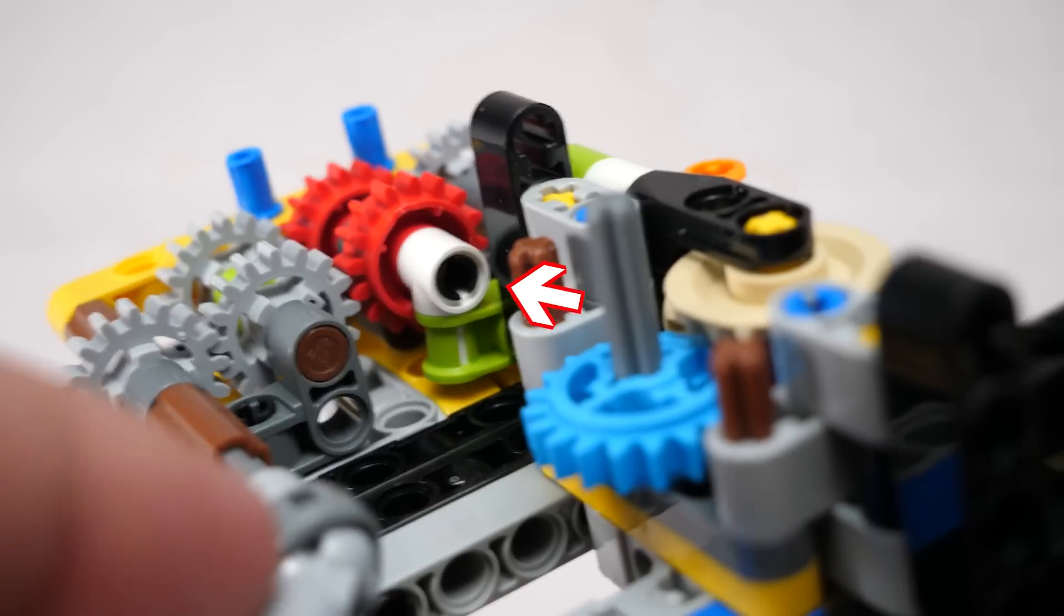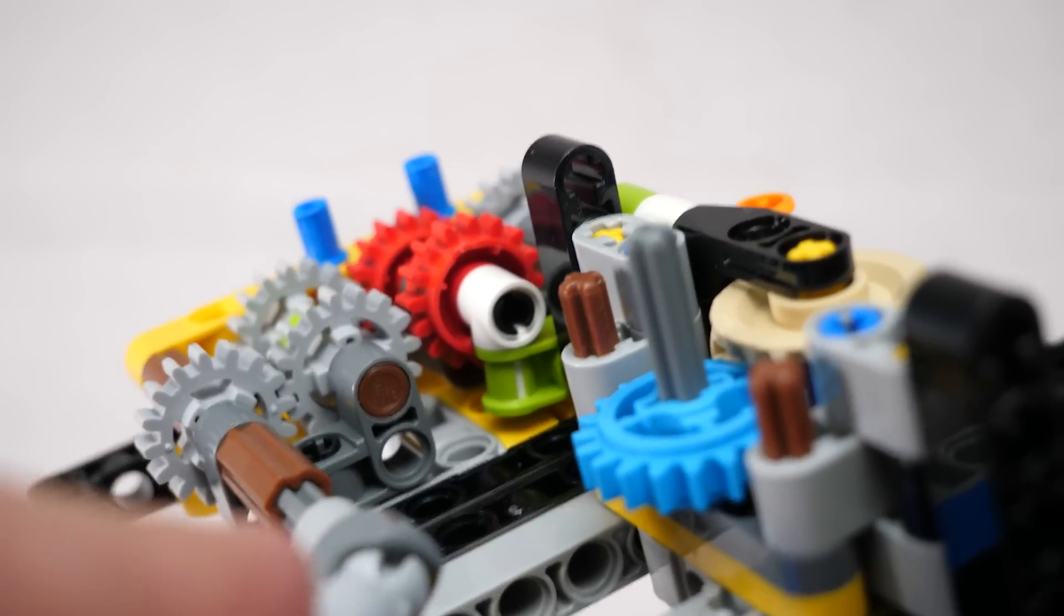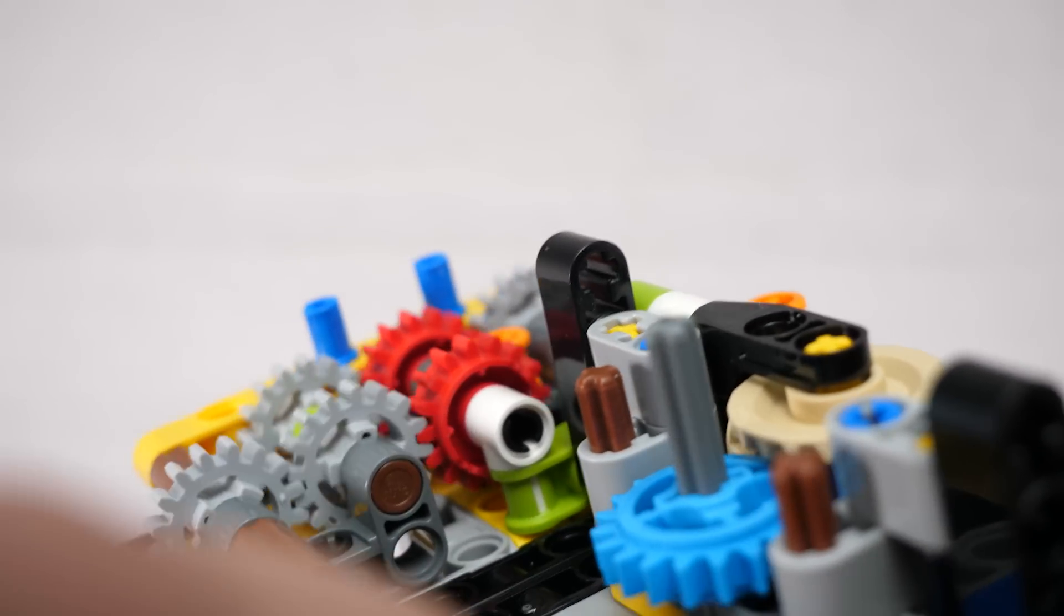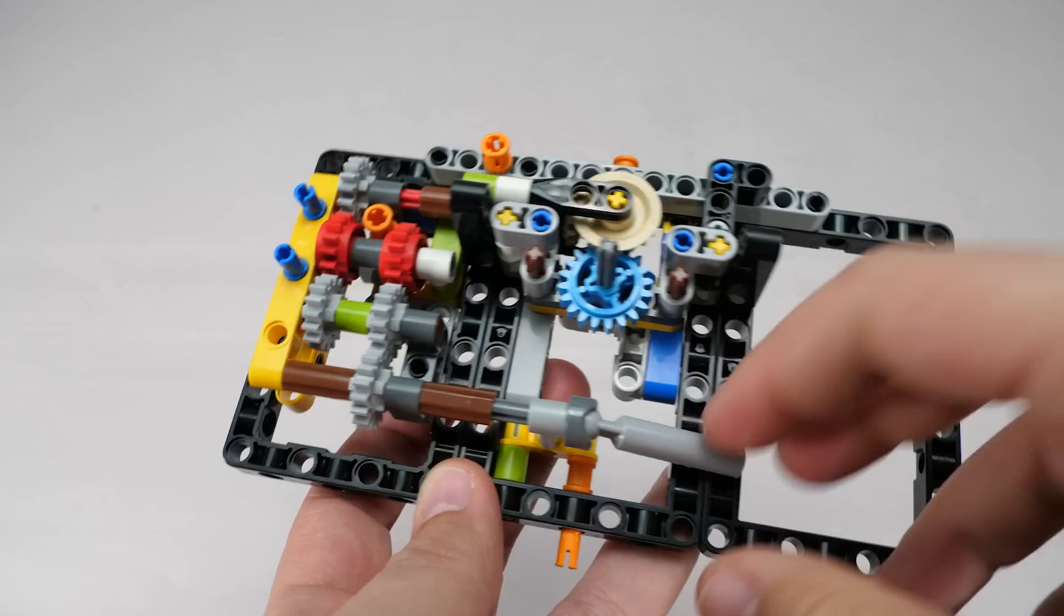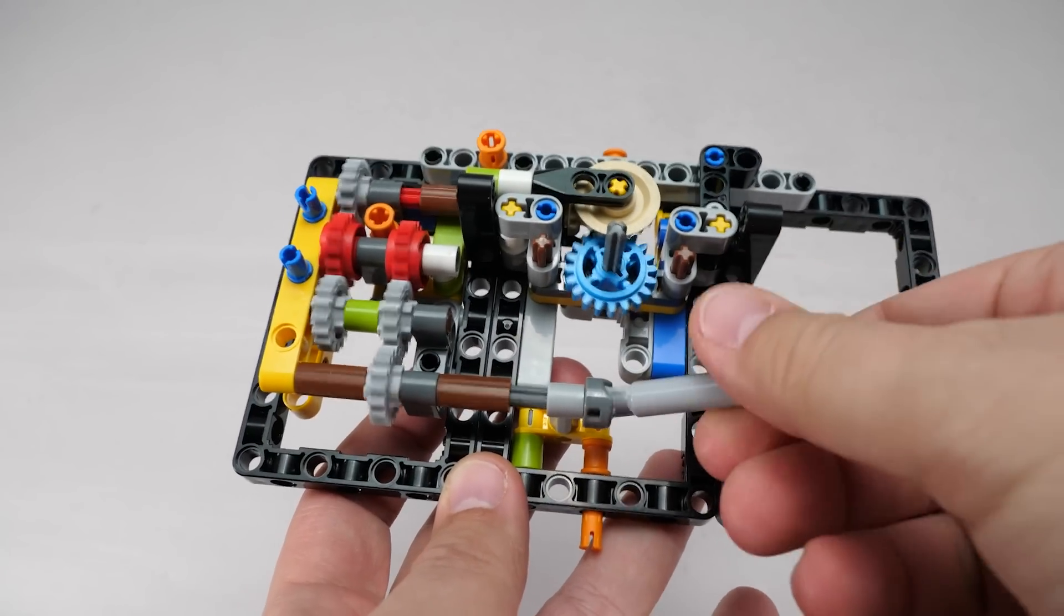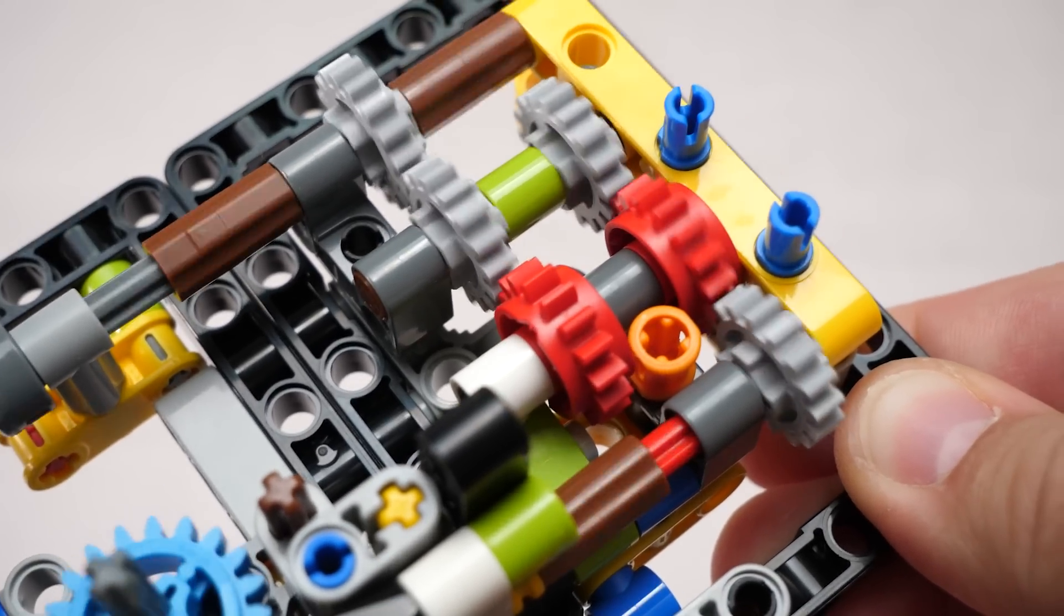The trick is this black friction pin. In one direction it creates enough resistance to lift the gear and its support piece, producing the sound. Replace it with a grey frictionless pin and the system becomes silent. A simple but brilliant function, I love it!